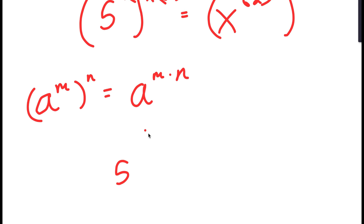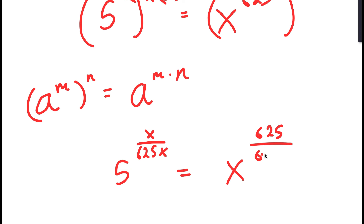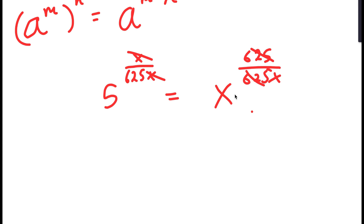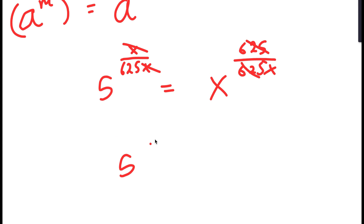So this is the same thing as 5 to the power of x over 625x is equal to x to the power of 625 over 625x. So x and x cancel out from my left-hand side and 625s cancel out from my right-hand side. So I'm left with 5 to the power of 1 over 625 is equal to x to the power of 1 over x.